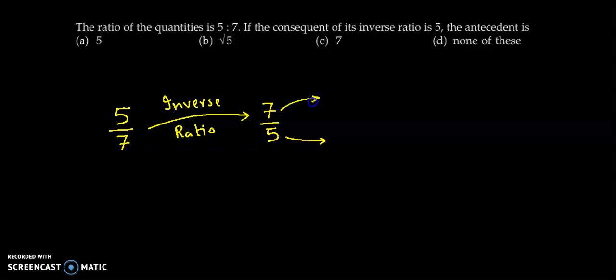So the antecedent is 7. So 7 is the antecedent and 5 is the consequent and we have been asked the antecedent. So the correct answer is option C, 7.